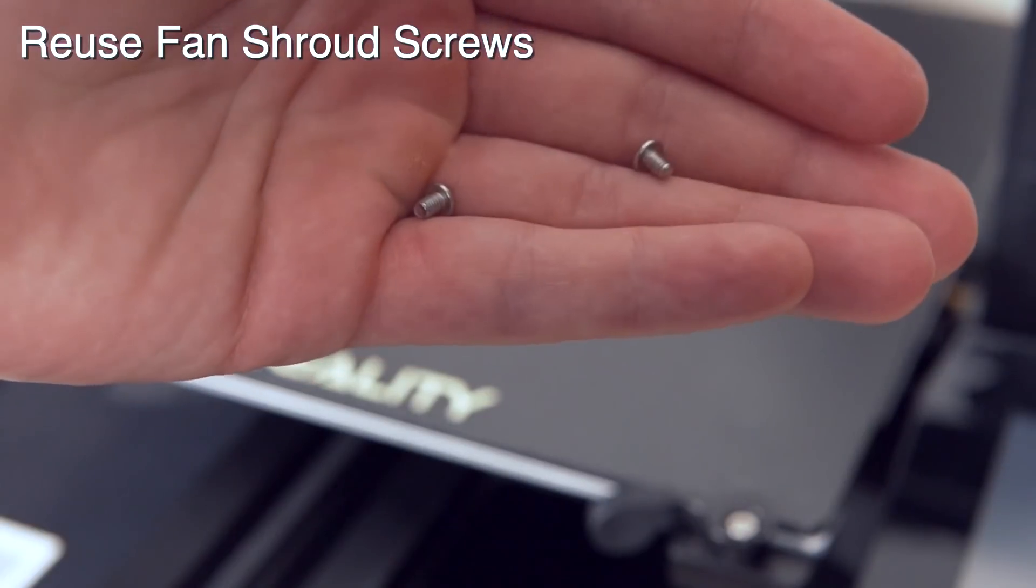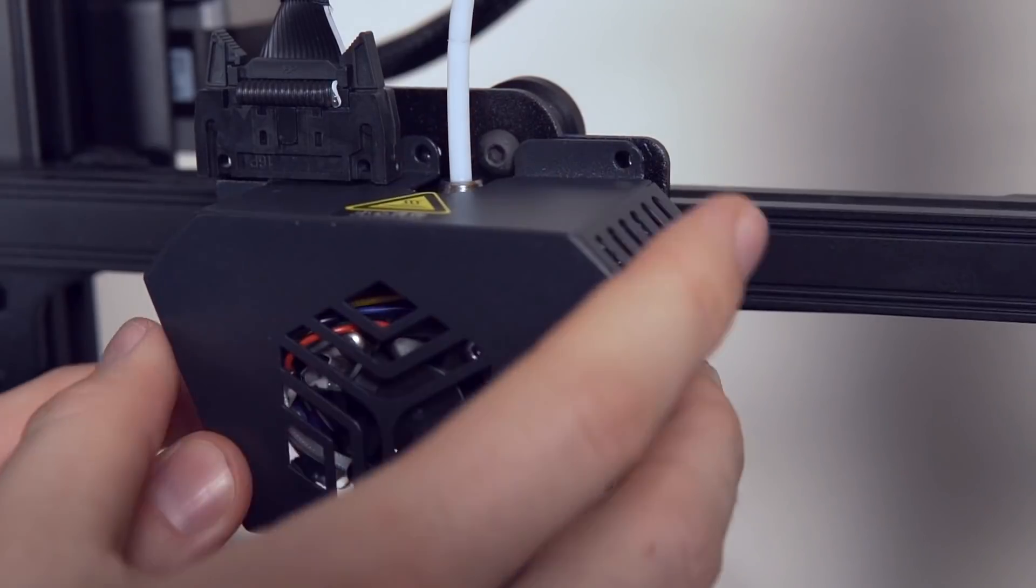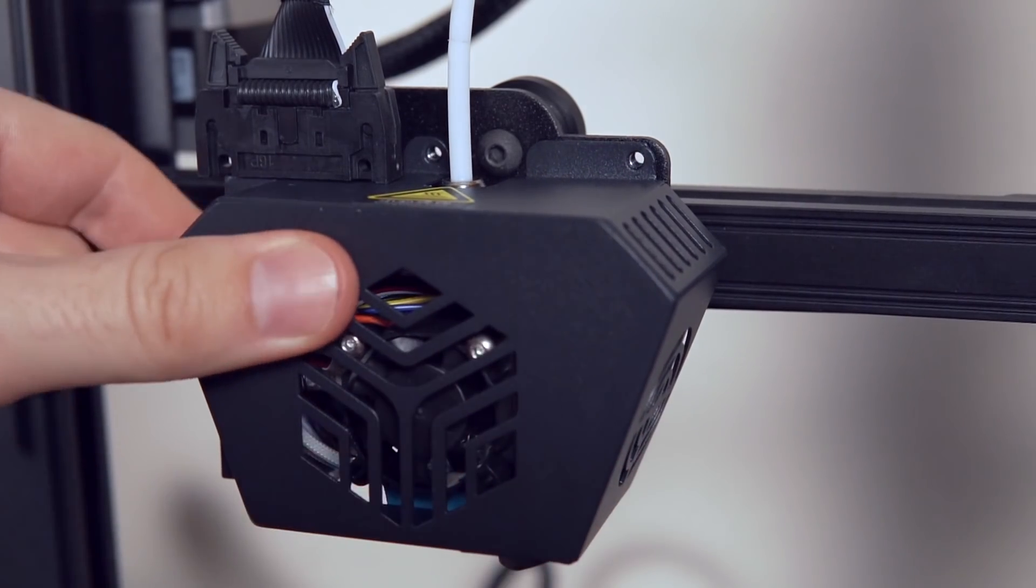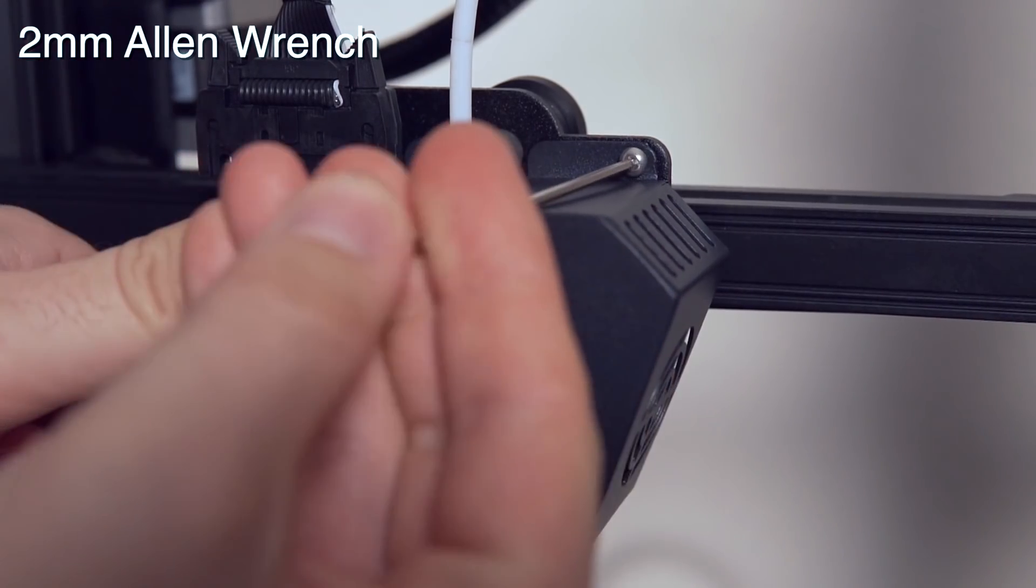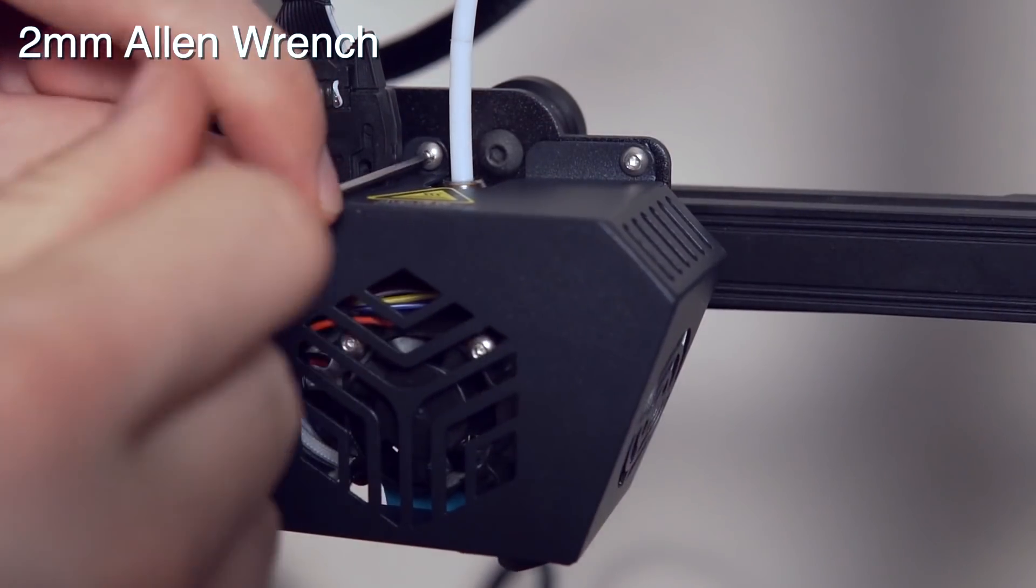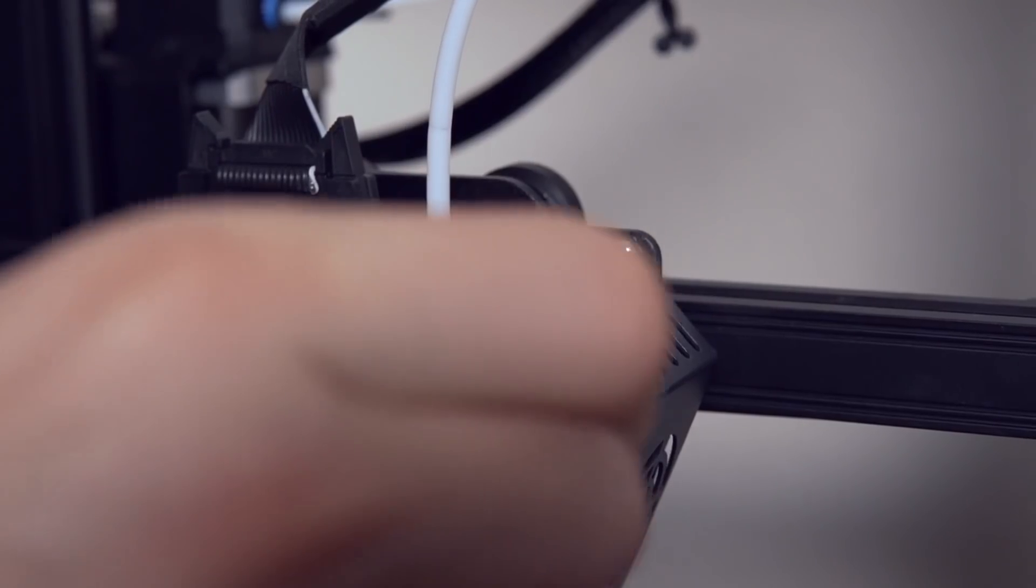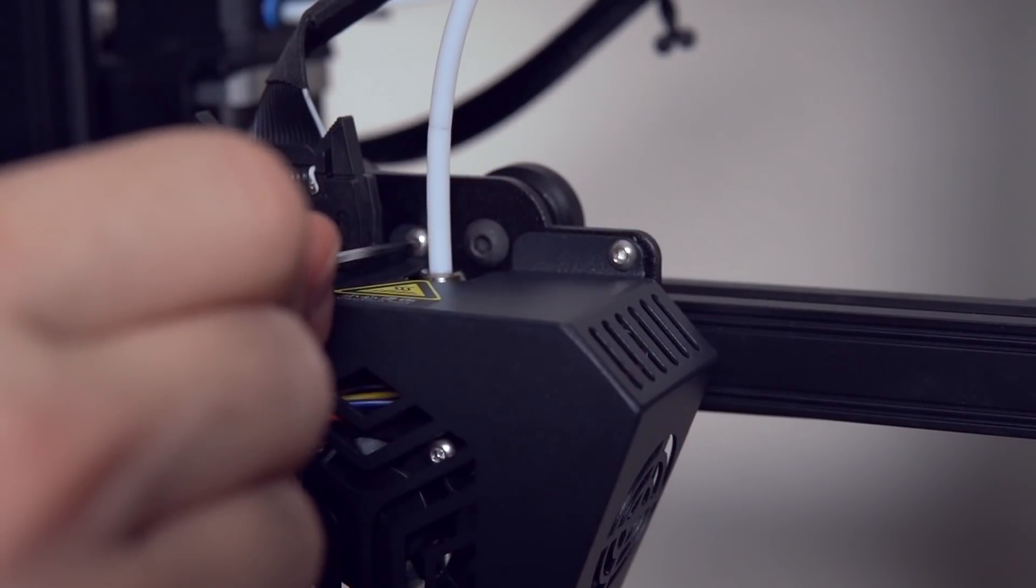Now, the final two screws are the short ones that are for the fan shroud. If you just go ahead and grab the fan shroud, line up the fan shroud with the holes on the X carriage back plate, we can go ahead and take the two millimeter Allen wrench and install this to close everything back up. With the fan shroud installed, you are now complete with the all metal hotend conversion.